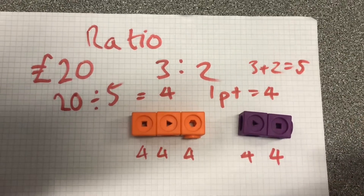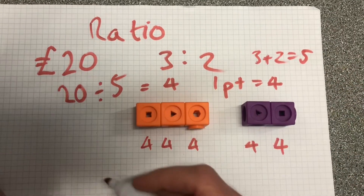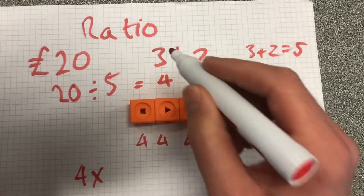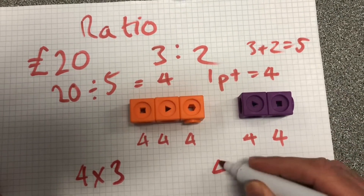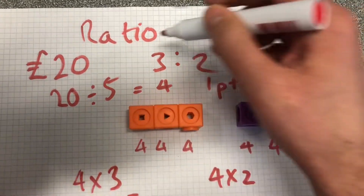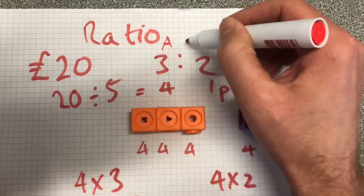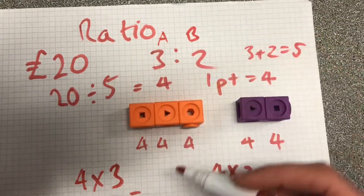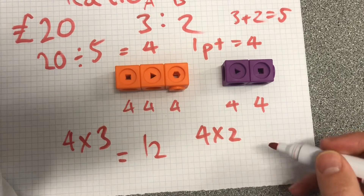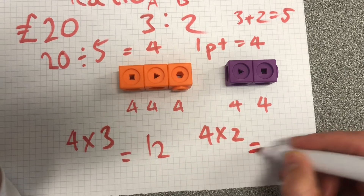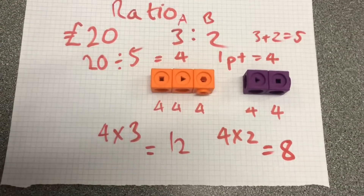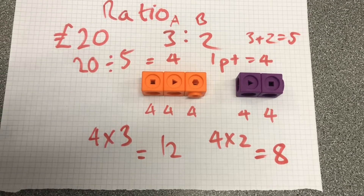We would times 4 by the ratio. So now we're going to multiply 4 by the 3, and 4 by the 2. So to split that, if these are 2 people, let's call them A and B — A would get 12, that's 4 plus 4 plus 4, and B would get 8. There we've split 20 in a given ratio, 3 to 2.